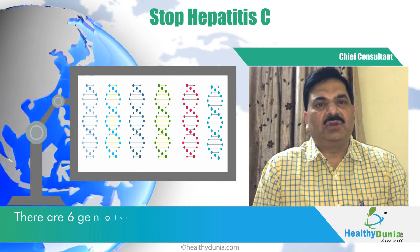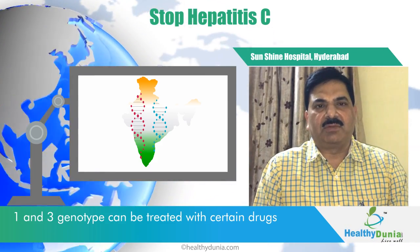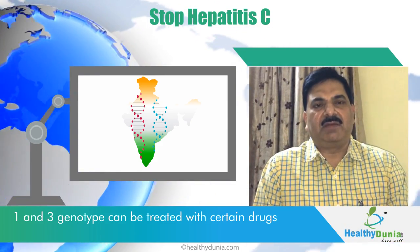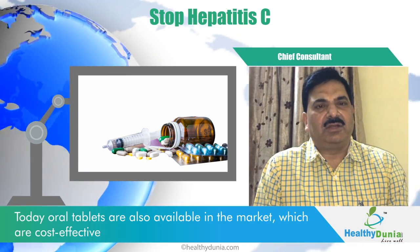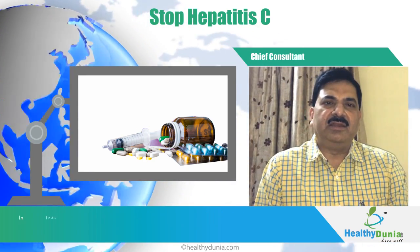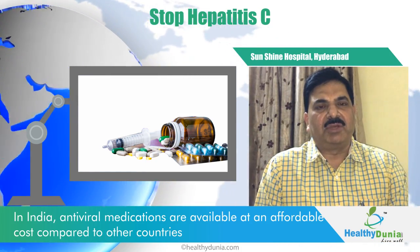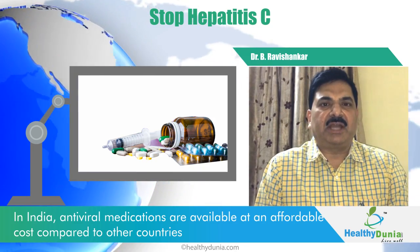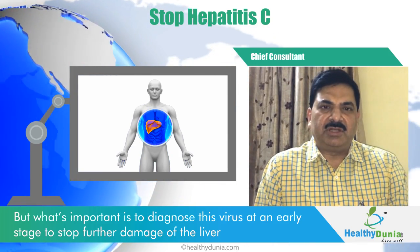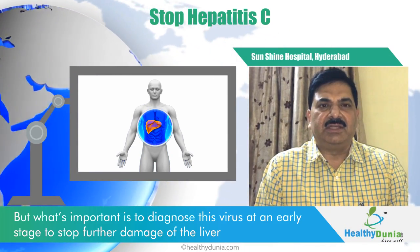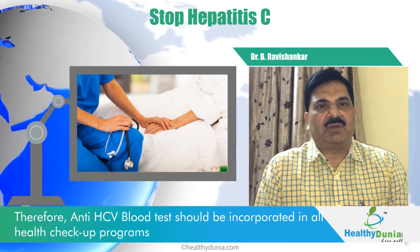There are six genotypes of this virus. In India, genotypes one and three are prevalent and need to be treated with certain drugs. Oral tablets are available for treatment of HCV infection and are cost effective. Luckily in India, antiviral medication is available at affordable rates compared to many parts of the world. Most importantly, the virus should be identified at an early stage and treated adequately so that liver disease does not progress, and ideally it should be incorporated in majority of master health check programs.